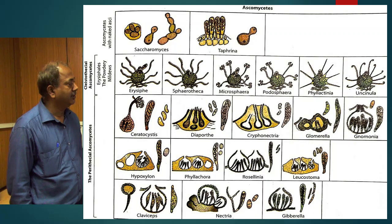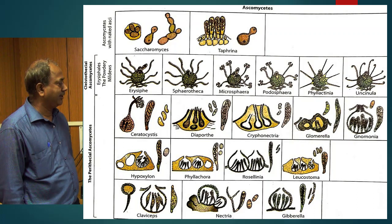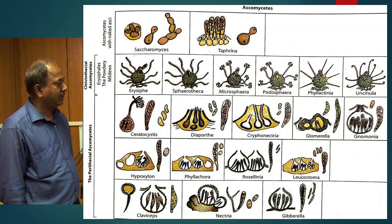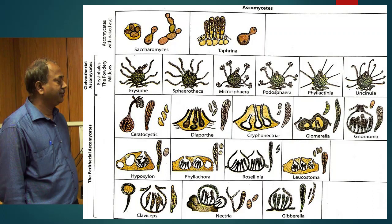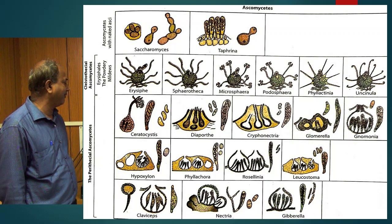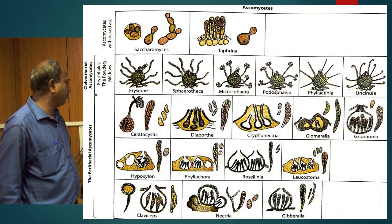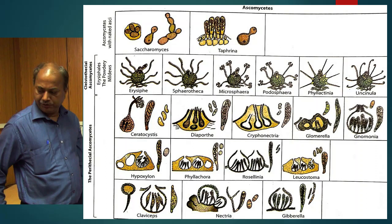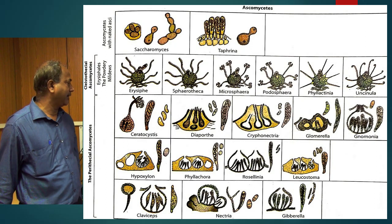I have already detailed about the Ascomycetes with naked asci — that is Saccharomyces and Taphrina — then powdery mildew fungi, that is Ascomycetes with completely closed ascocarps (cleistothecia), which are produced in Erysiphe, then Sphaerotheca, then Microsphaera, then Podosphaera, then Phyllactinia, then Uncinula. Uncinula — you might have heard about powdery mildew of grapes, caused by Uncinula necator.